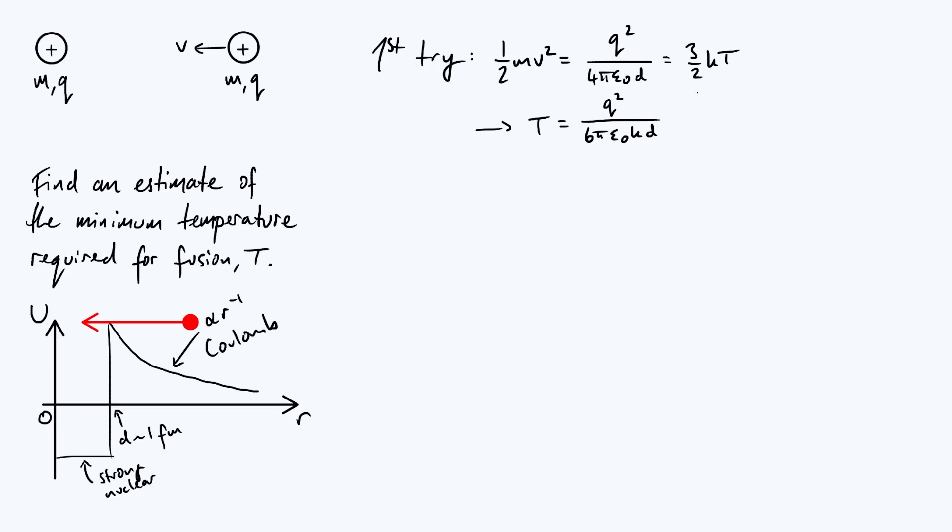So numerically, how big is that? Well, if we do this for hydrogen, so hydrogen nuclei, which is a single proton, then q is just the value of the charge of a proton, everything else is known, and we get about 10 to the 10 kelvin as an order of magnitude. That's specifically for hydrogen fusion.